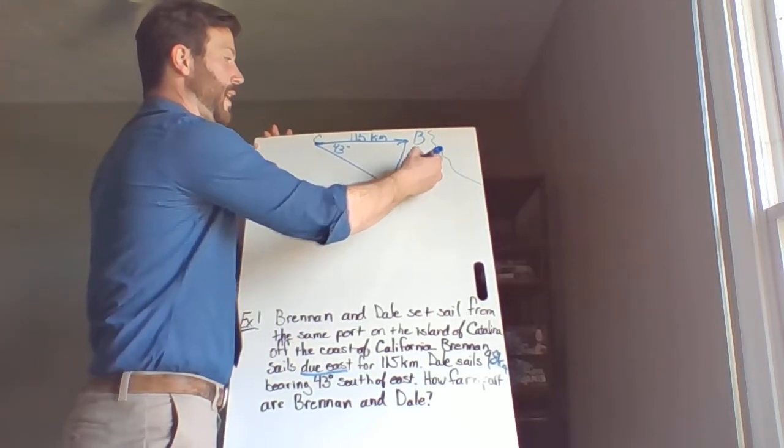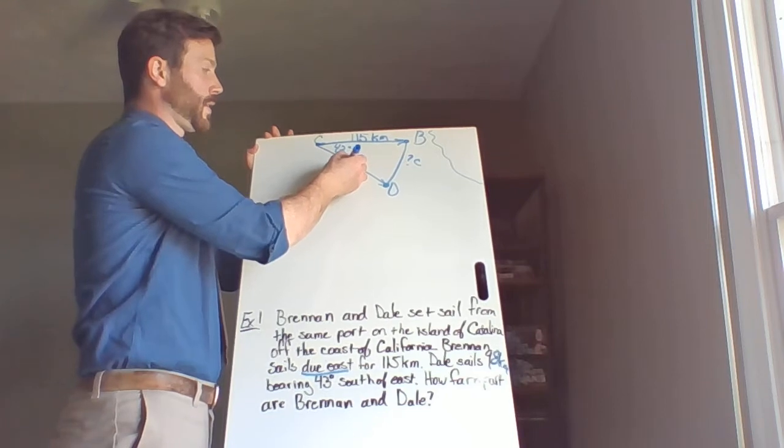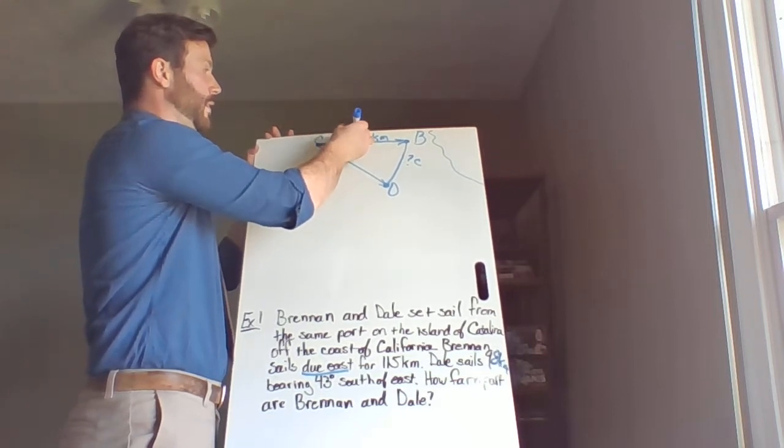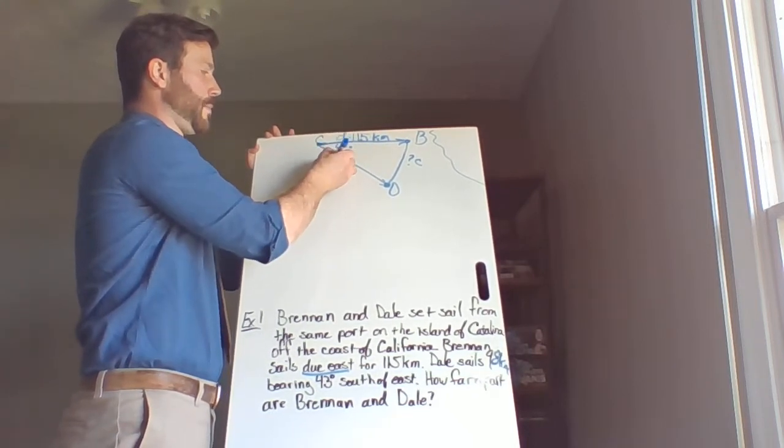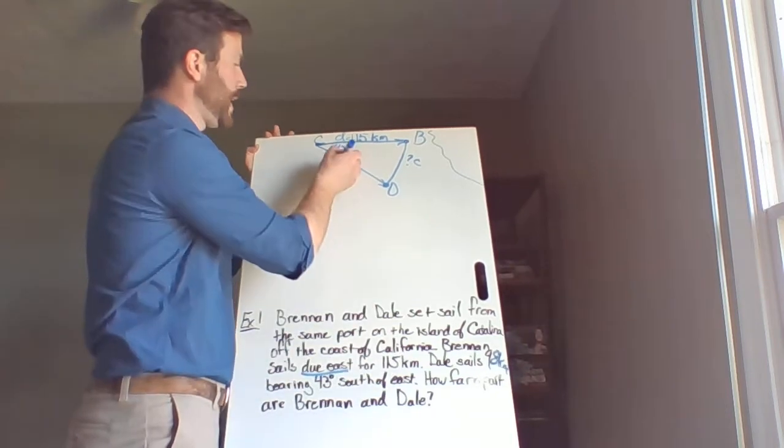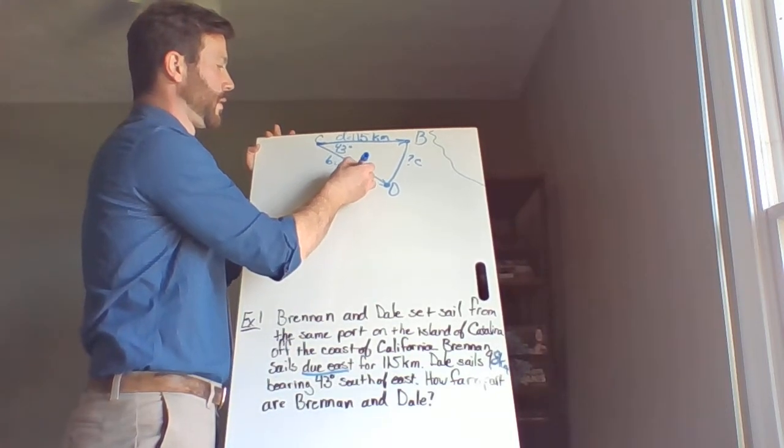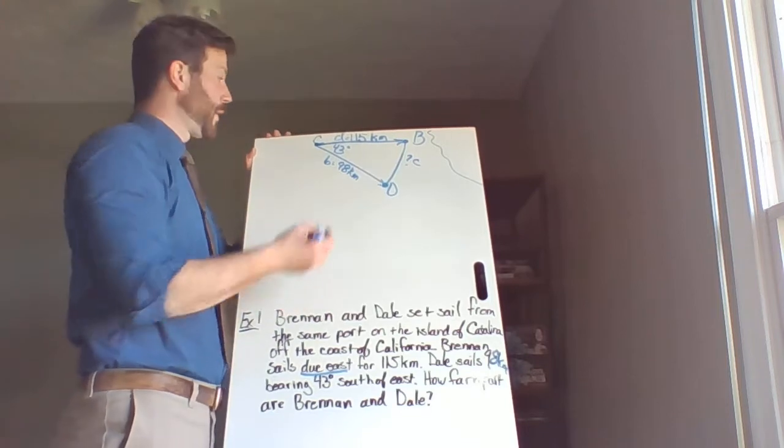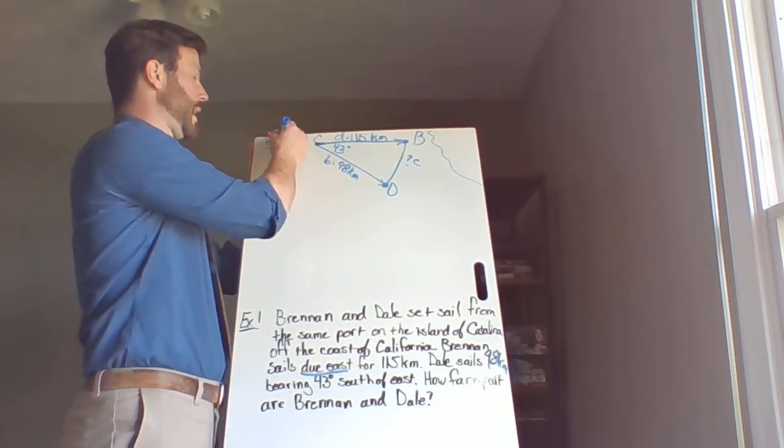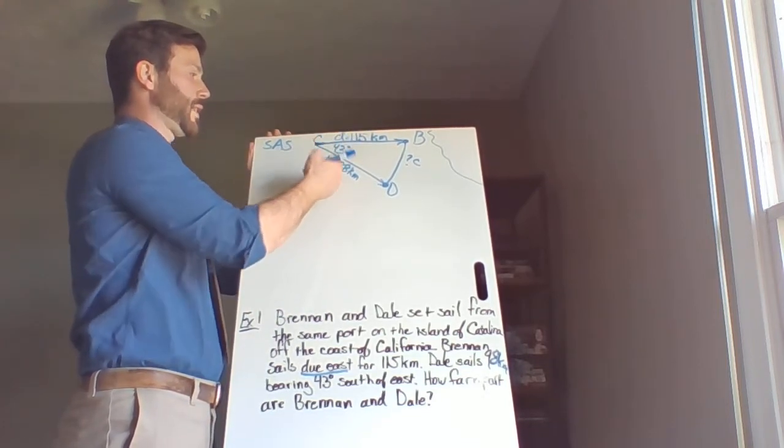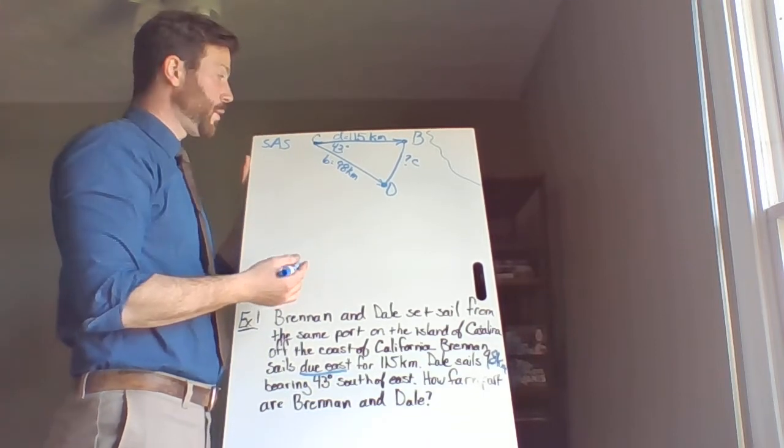This is what we're looking for. So this is side C of our triangle. Here's side D. Here's side B, which they tell us is 98 kilometers. And we want to find side C. Well, the setup that we have here is side angle side. So we're going to use law of cosines.